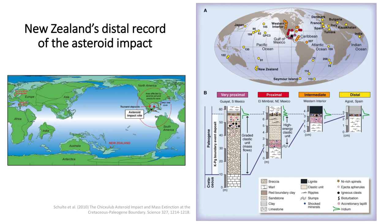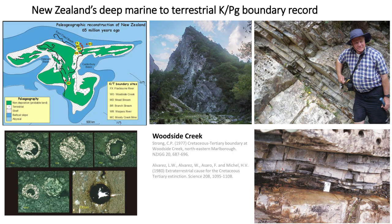New Zealand is important because if the asteroid impacted in the Yucatan Peninsula, we're a really good place to study the distal effects — we're a long way away. We'd expect a less disruptive sequence without the high energy deposits seen around the Gulf of Mexico, but we'd still get the iridium anomaly and various elements like spinels, spherules, and microtektites from the dust cloud fallout. Woodside Creek came to prominence in the 1980 Alvarez paper and is touted as the third site in the impact hypothesis story — along with Gubbio in Italy and Stevns Klint in Denmark — all having iridium enrichments at the KT boundary.